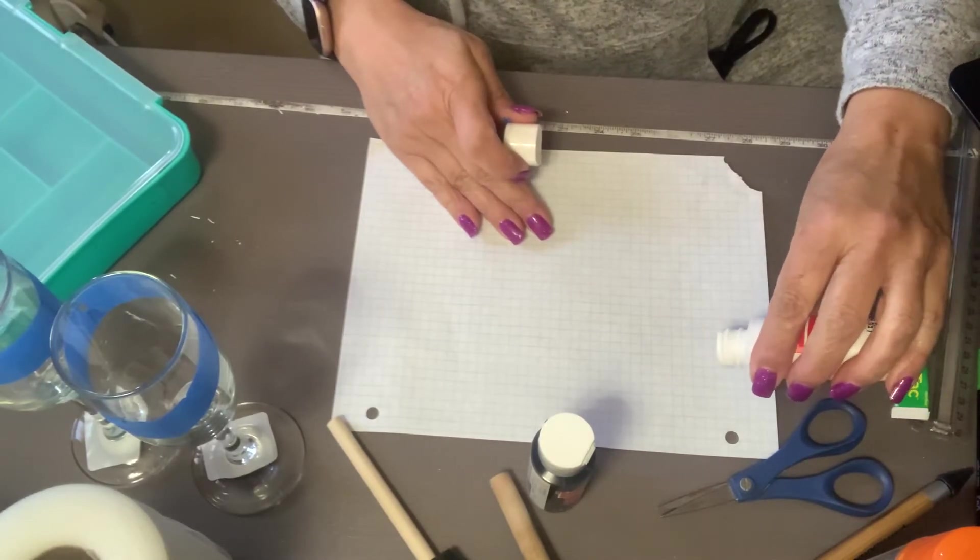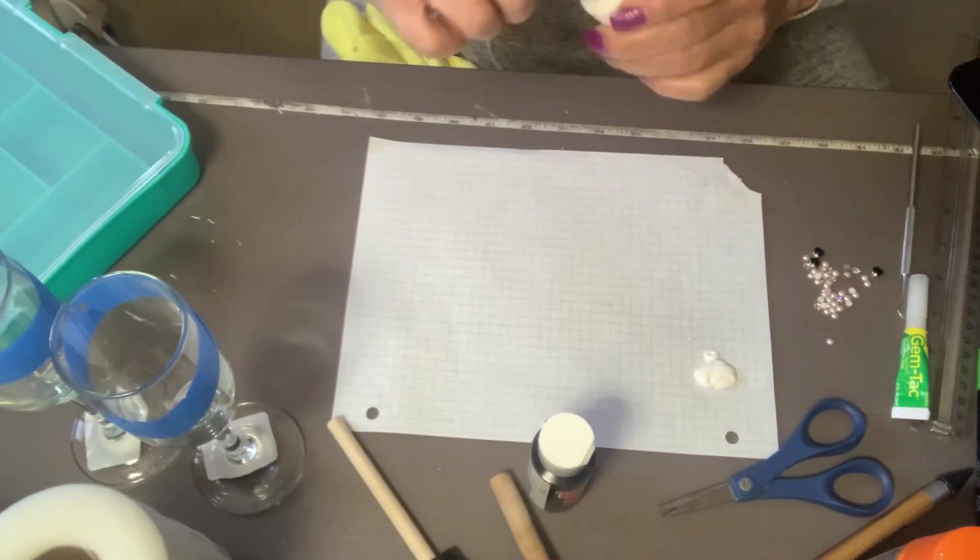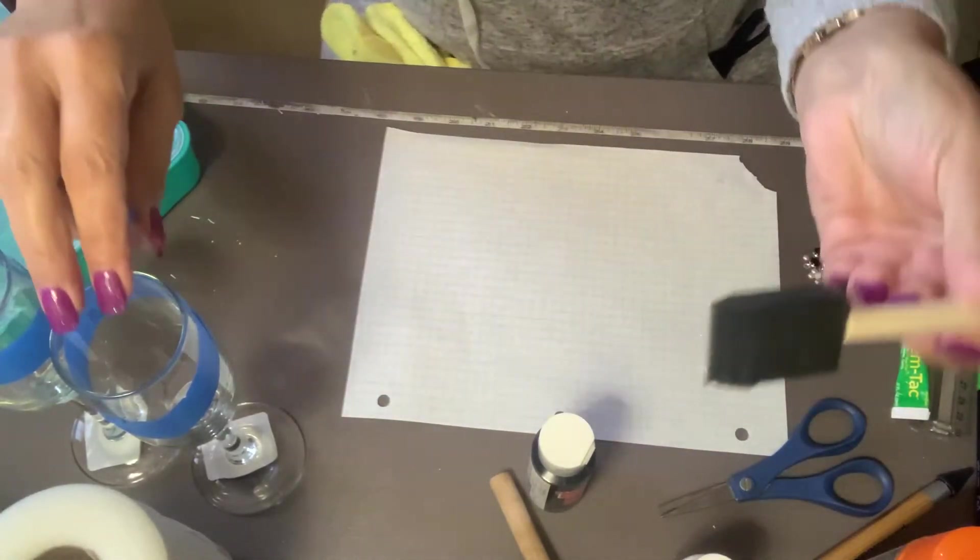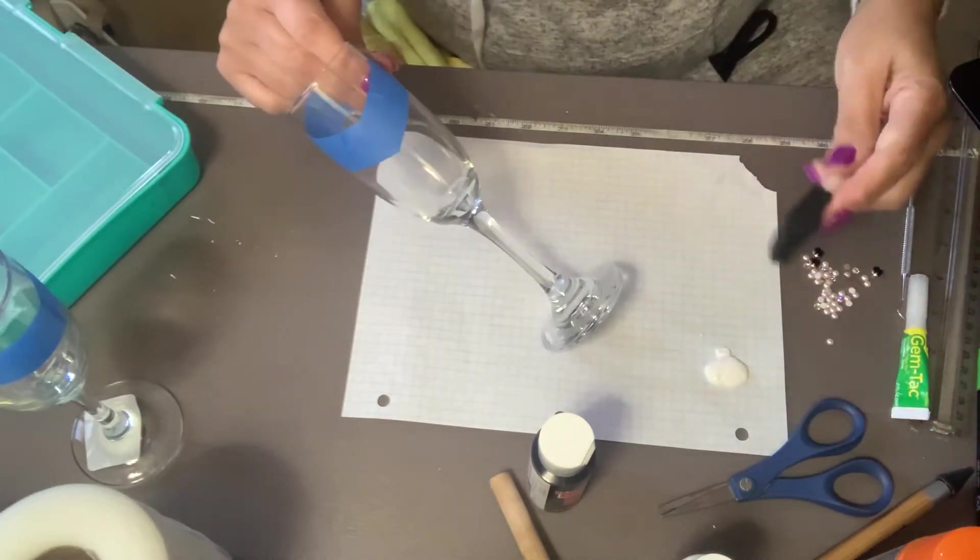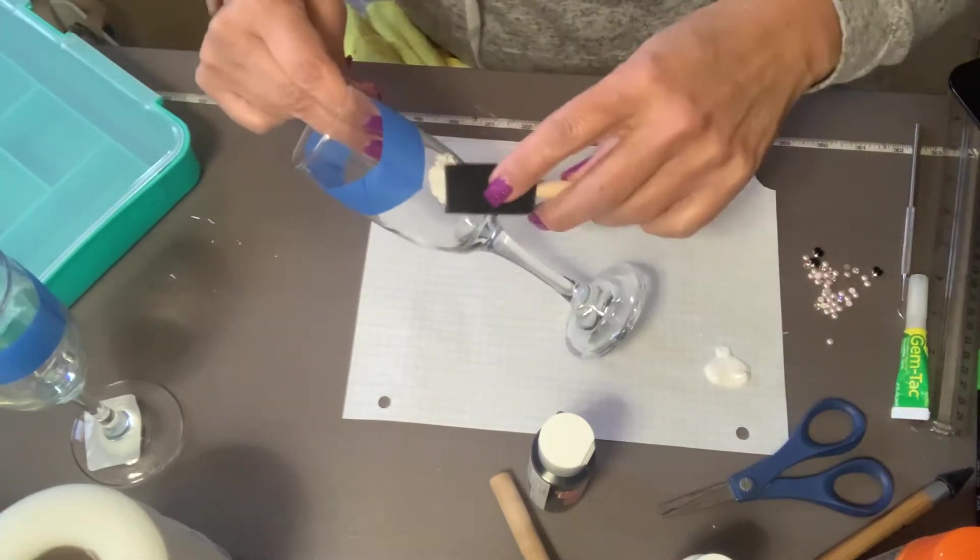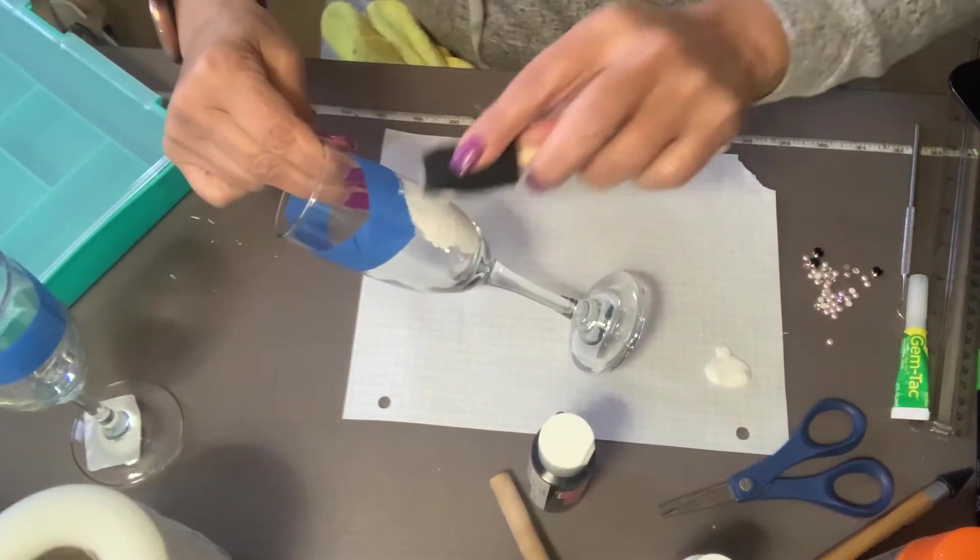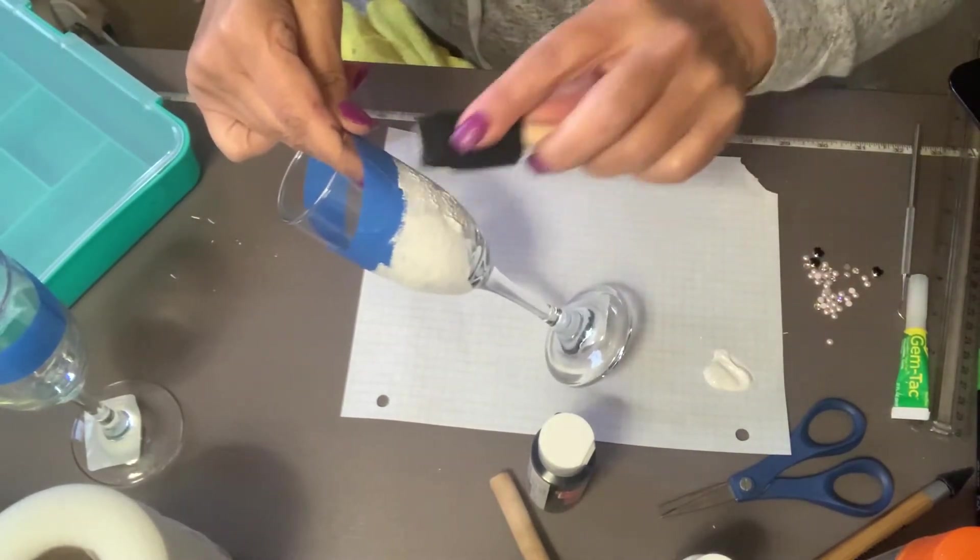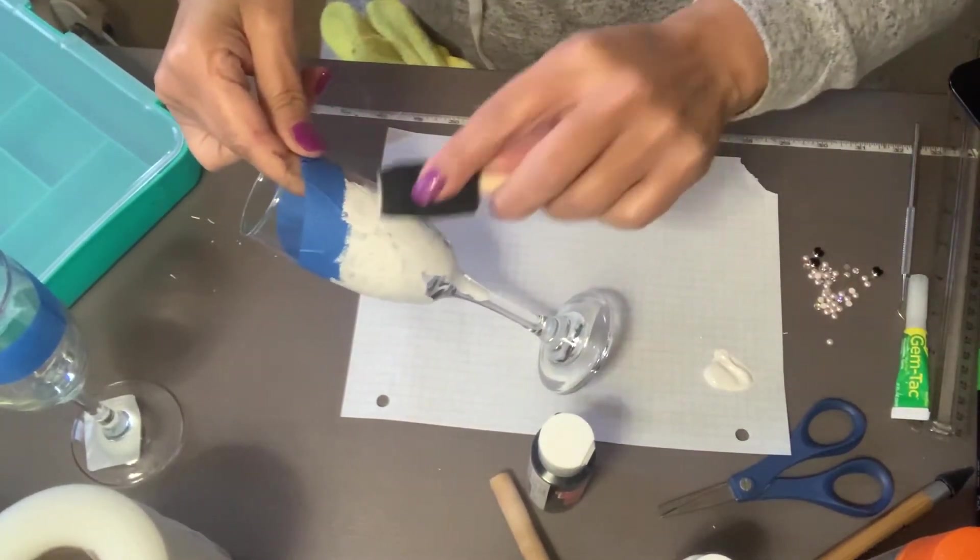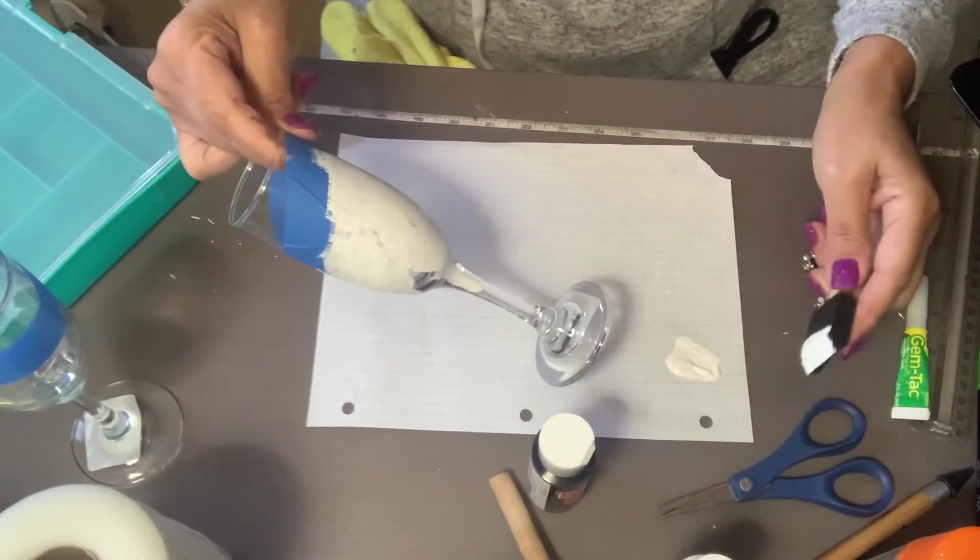So here it is. I'm going to pour some of my paint into my plate. And then here's my sponge. And you're just going to go all around going in little kicks right on with the paint on the glass, adding the paint.